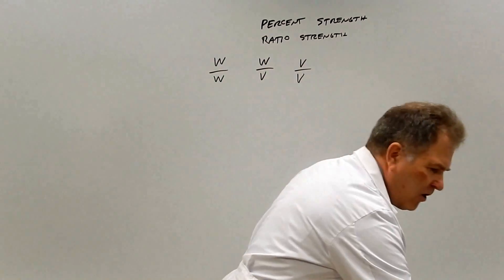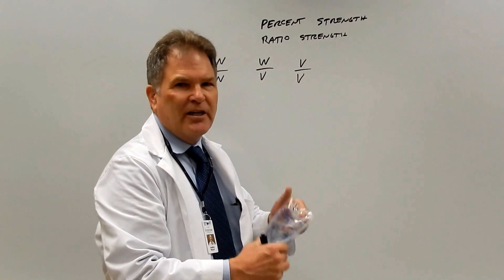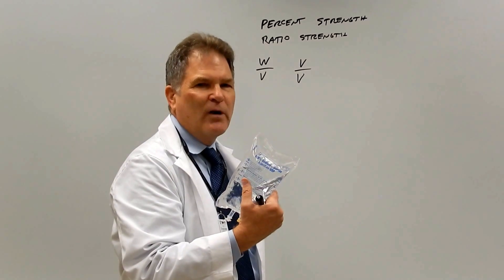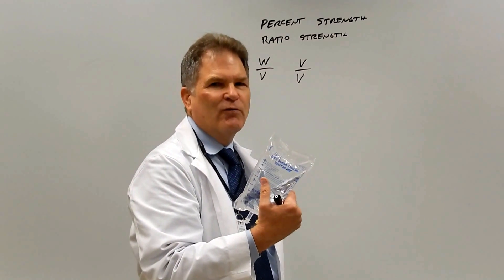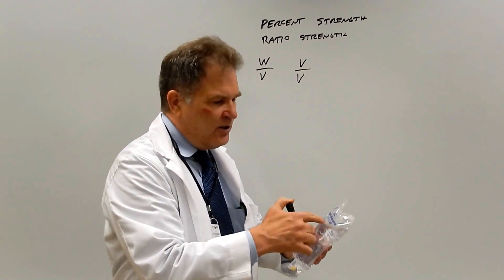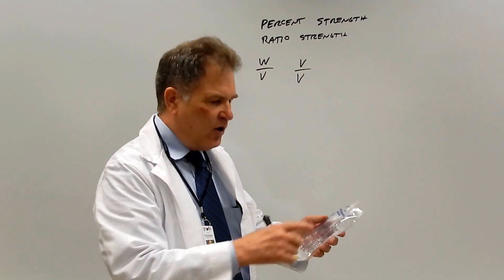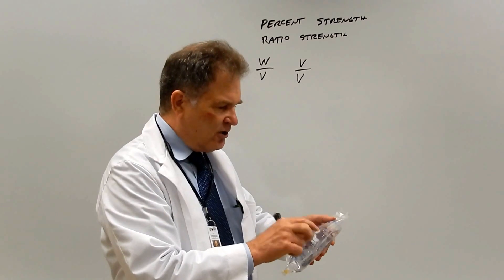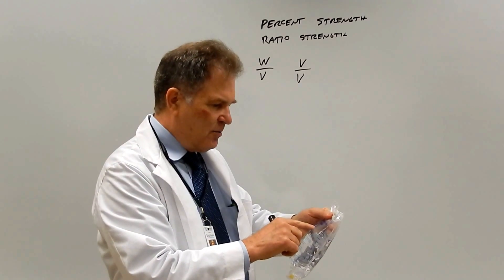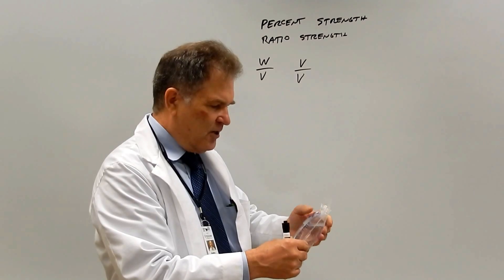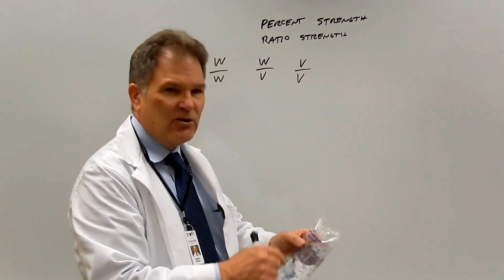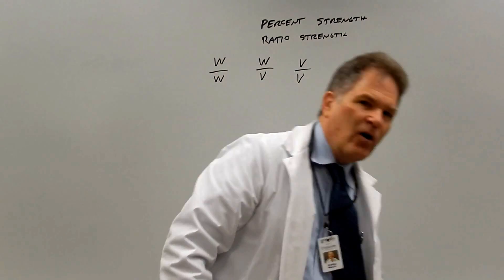The key to these problems is determining whether the strength is weight-weight, weight-volume, or volume-volume. Sometimes it's obvious — you'd know to weigh sodium chloride and measure the water volume. You can also look in the fine print: for example, 0.9 grams of sodium chloride QS to 100 mL of water — clearly weight-volume.